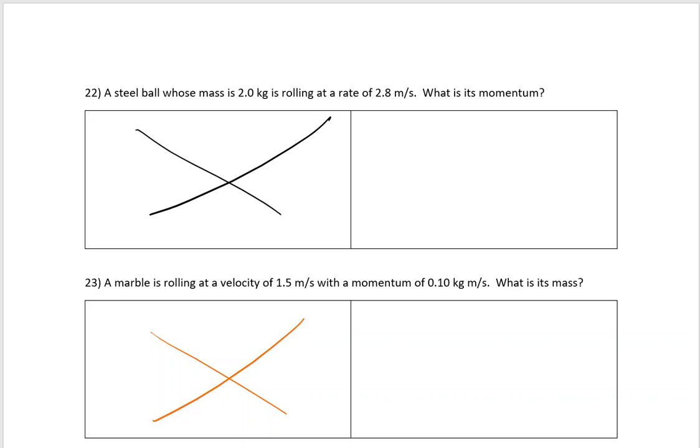The steel ball whose mass is 2 kilograms is rolling at a rate of 2.8 meters per second. What is the momentum? Our equation for momentum is P equals MV. Just scribble out the left-hand side, and on the right-hand side we're going to write in the equation. The steel ball has a mass of 2 kilograms, and its velocity is 2.8 meters per second. That means the momentum is 2 times 2.8 is 5.6 kilogram meters per second. That's all there is to 22.